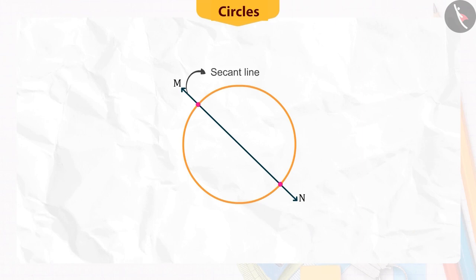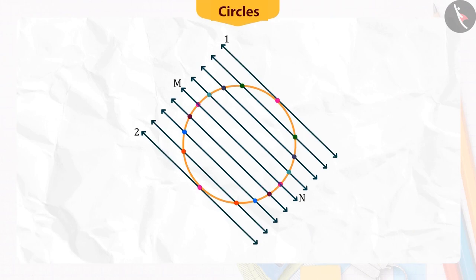First, let's draw a circle and a secant MN of a circle. Now, if various lines are drawn parallel to this secant on both sides, you will find that after some steps, as we are reaching towards the circumference of the circle, the length of the chord formed by the lines will gradually decrease.